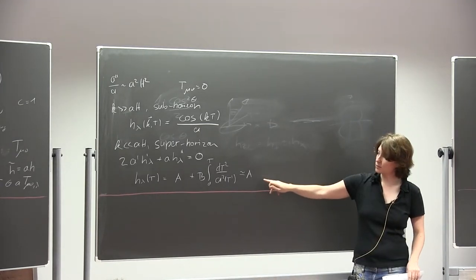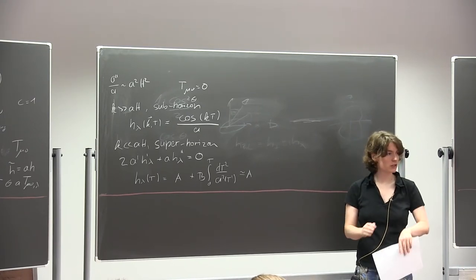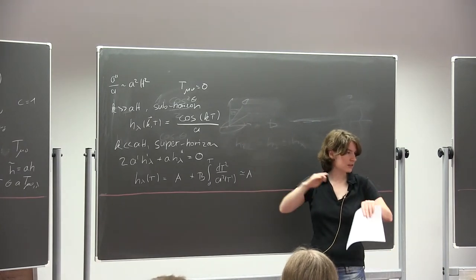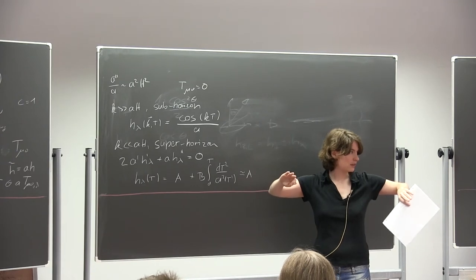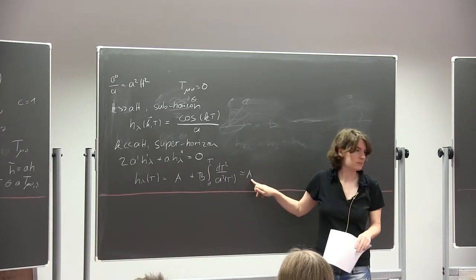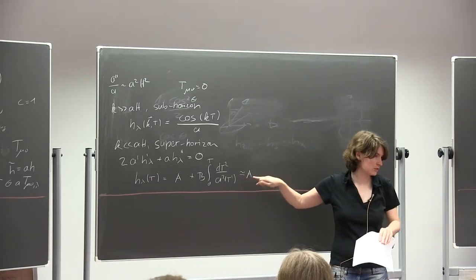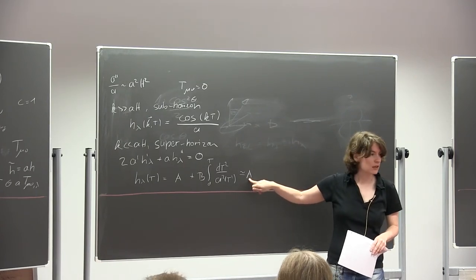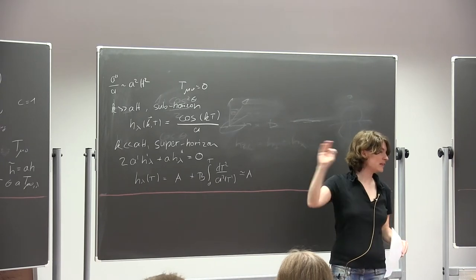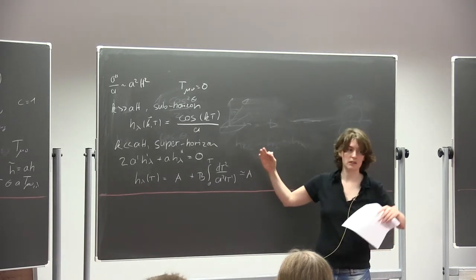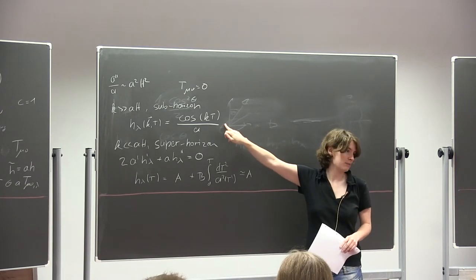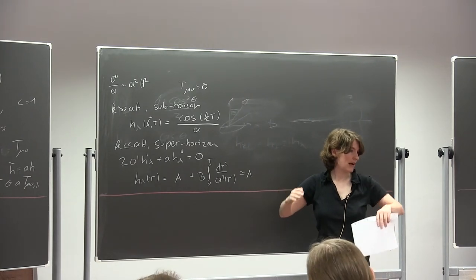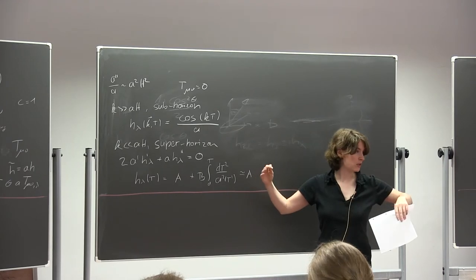This is particularly important in inflation. You start with sub-horizon perturbations — decent waves. At some point they get pushed outside the horizon. Once outside, they do nothing: they freeze at their amplitude, don't oscillate, and don't dilute with the scale factor. They can stay frozen for billions of years. When they re-enter the horizon, they start oscillating again. This is how we store information from the extremely early universe outside the horizon without losing it to cosmic expansion.